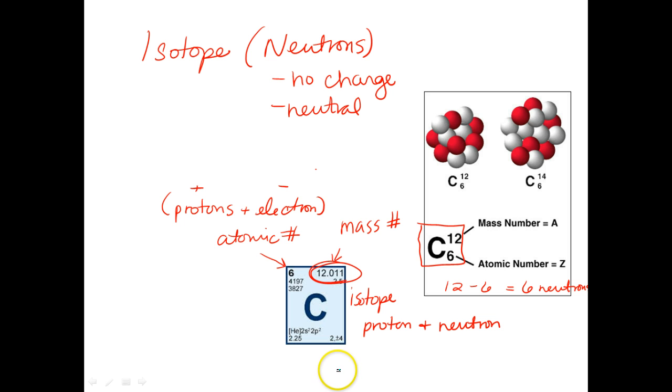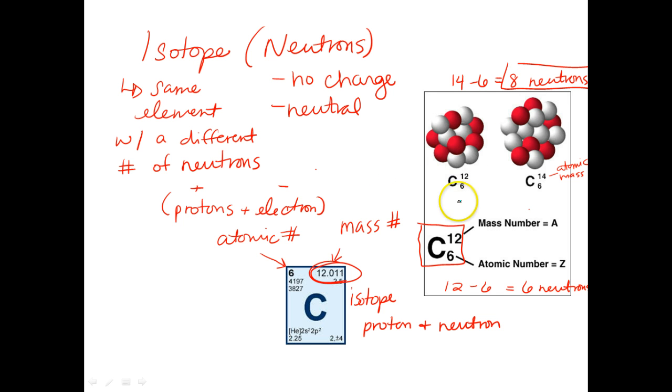Then you can see on the other one where we have carbon-14. Carbon-14 has an atomic mass of 14. That's going to be the mass. We still have the atomic number of 6, because if you change the protons, then it would be a different element. So we still have 6 protons. If we subtract the two, we would get 8, and that's going to be the number of neutrons for that particular isotope. So carbon-14 has 8 neutrons where carbon-12 has 6 neutrons.